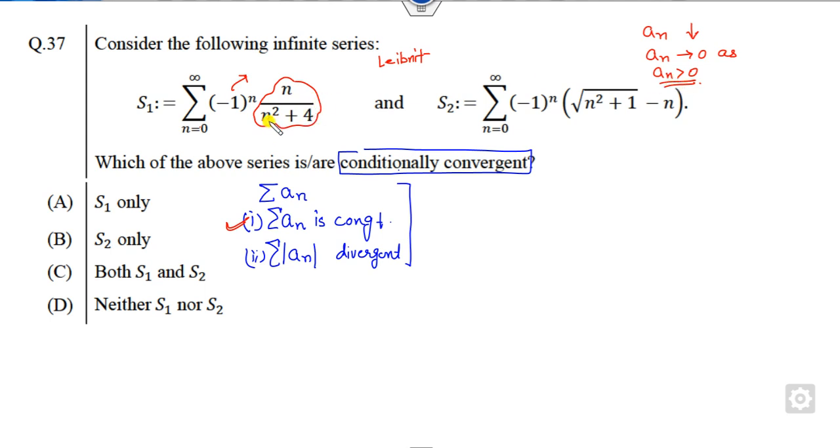And also what will happen when you take n approaches infinity? It is 1 upon n, that is 0, so that will go to 0. So it means this is convergent. S1 is convergent. Now what is the modulus of this?